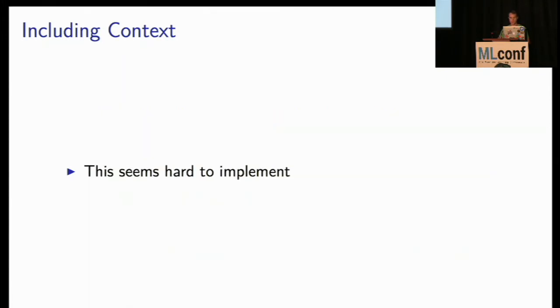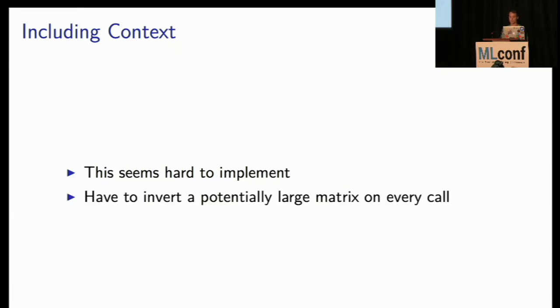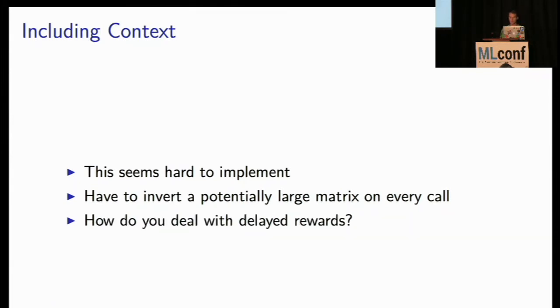So but this is actually pretty hard to implement. Like you have to be able to have infrastructure for online learning. You need to be able to update things quickly. You need to invert a potentially large matrix on every call to the algorithm. So that covariance matrix is, if you have a lot of features, that's gonna become challenging. And how do you deal with delayed rewards? So if you don't observe the reward before the next time you make the call, how do you update your outcome variable?